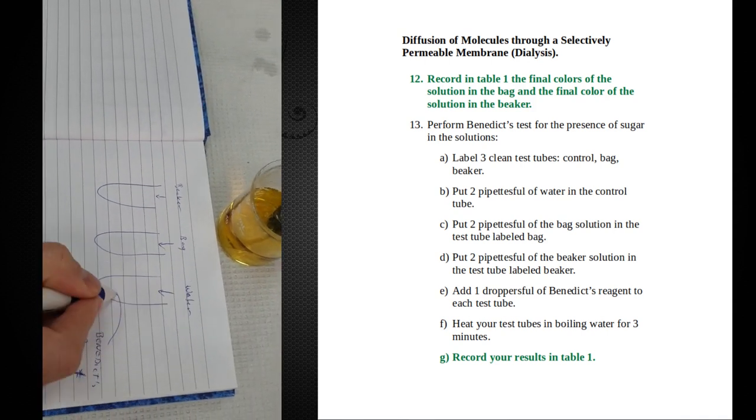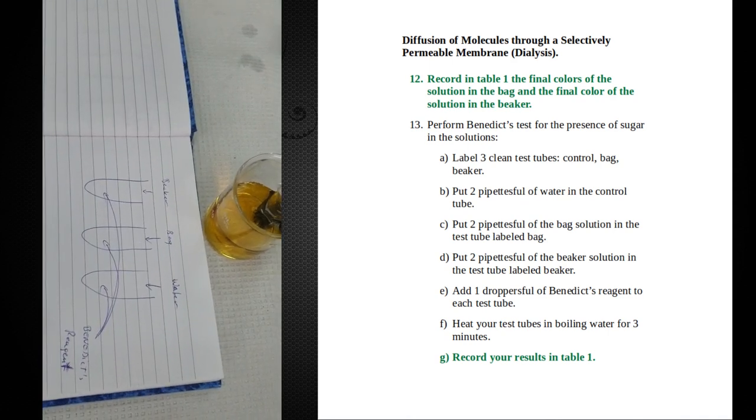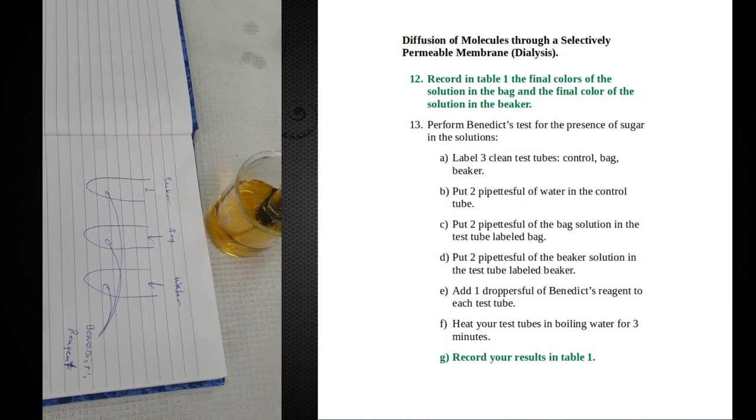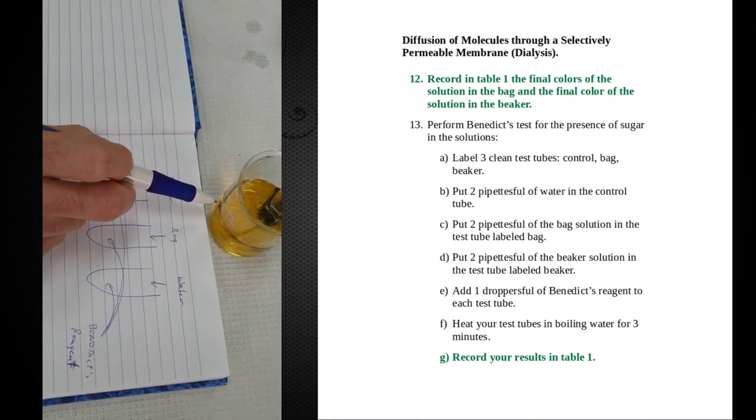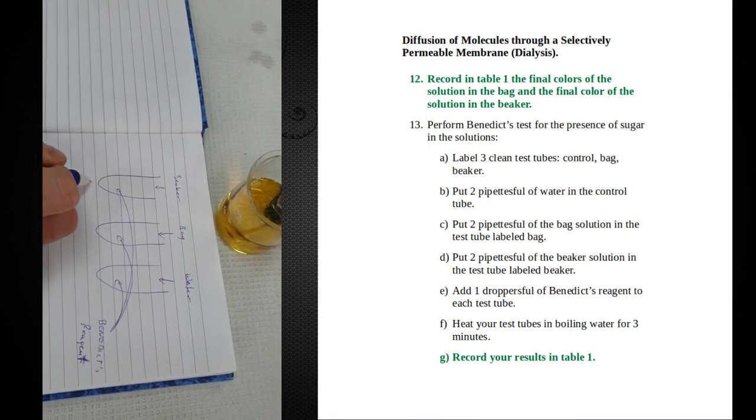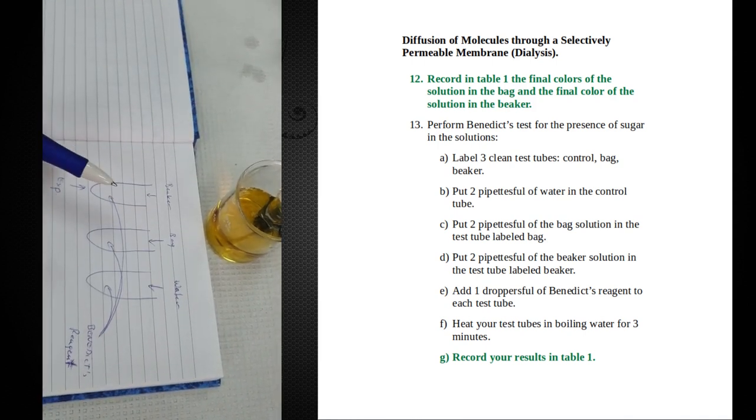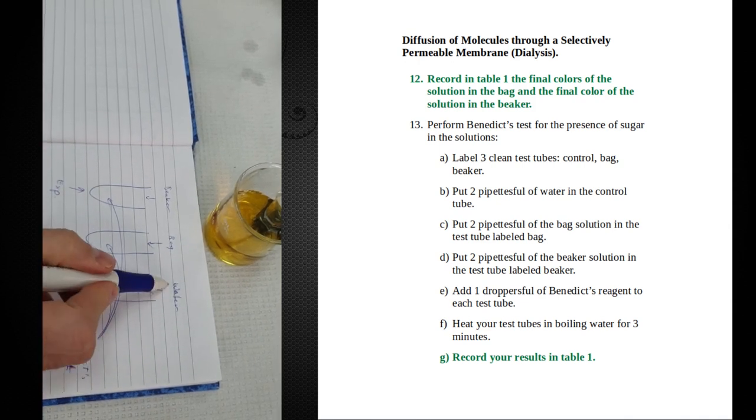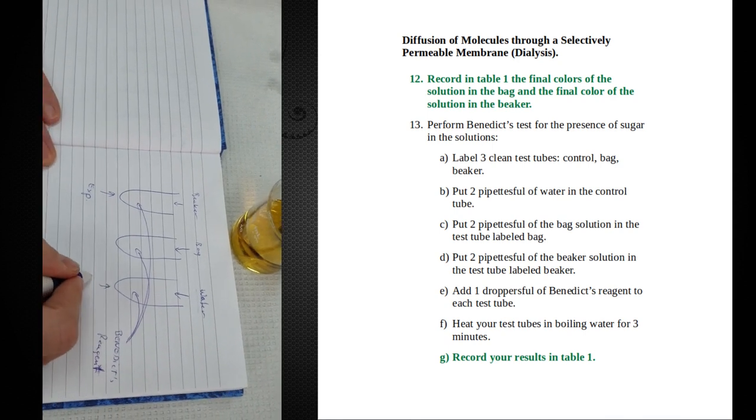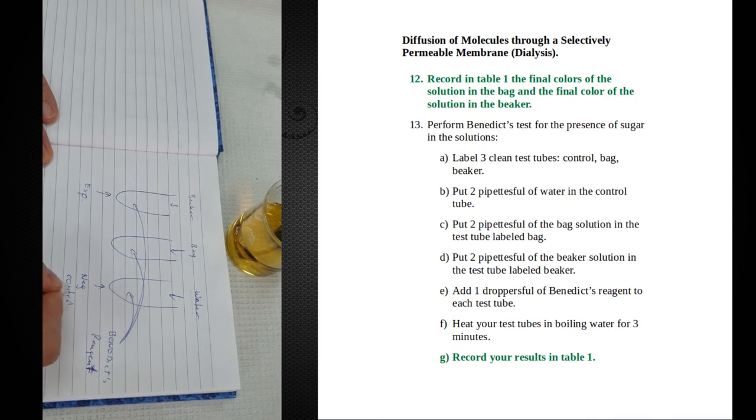Each of these will get the same amount of Benedict's reagent. We're setting up an experiment that has some controls and some experimental tubes. Now, we don't know what's in the beaker. We want to find that out. So that's our experimental tube. We know what we put into the bag, and we know what's in water. We know that water does not have glucose, so this is going to be our negative control.